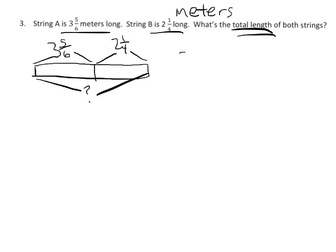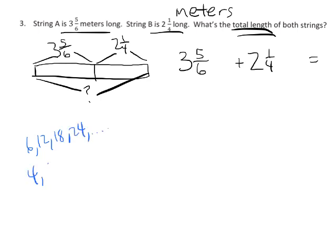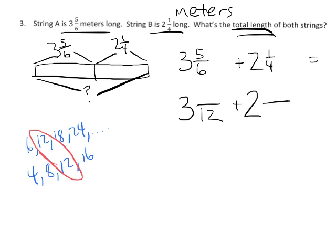We're going to write 3 and 5/6, leaving a little bit of a gap, plus 2 and 1/4, leaving a little bit of a gap. Our common denominator — let's do our skip counting: 6, 12, 18, 24... and then our fours: 4, 8, 12, 16. There is our common denominator — it's 12. We need to change the sixths into twelfths and turn the fourths into twelfths. In order to turn sixths into twelfths, they need to be multiplied by 2, so 5 times 2 is 10. In order to turn fourths into twelfths, they need to be multiplied by 3, so 1 times 3 is 3.